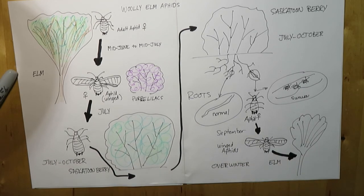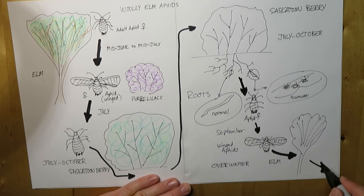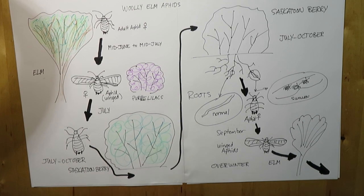On the elm itself, you will see some curling leaves and cupping and lots of rain of honeydew. But again, as I said, this is more of a focus of a saskatoon berry pest that we're worried about.